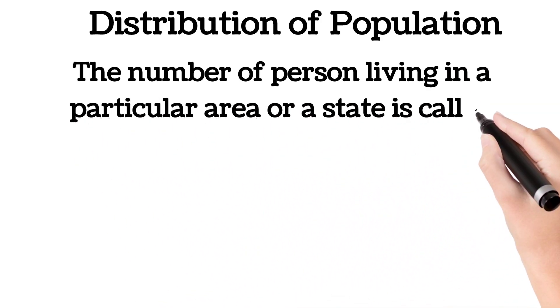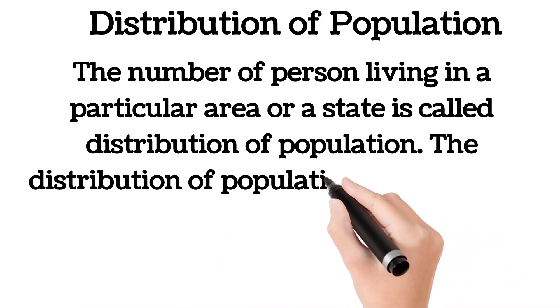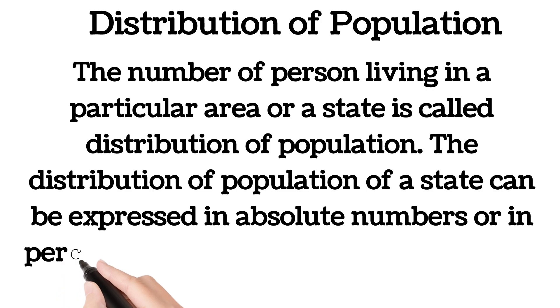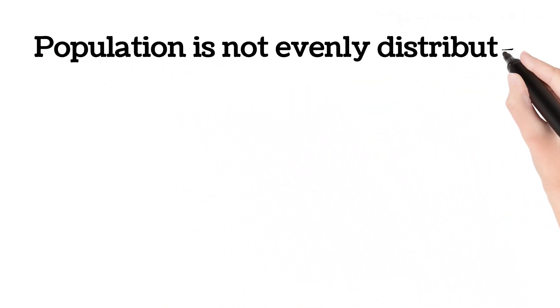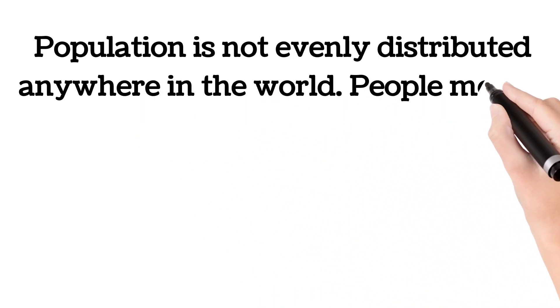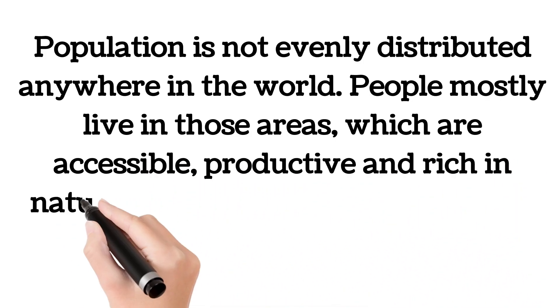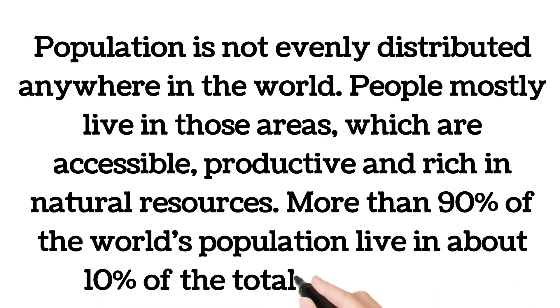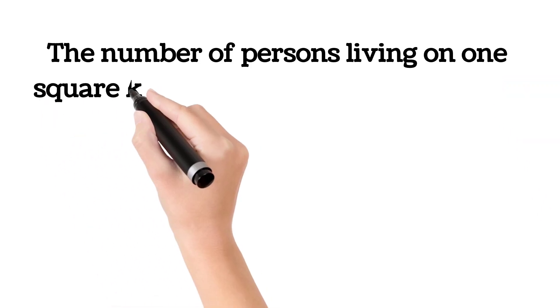Now let us talk about distribution of population. The number of persons living in a particular area or state is called distribution of population. It can be expressed in absolute numbers or in percentage to the total population of the country. Population is not evenly distributed anywhere in the world. People mostly live in those areas which are accessible, productive, and rich in natural resources.